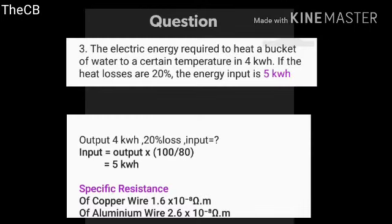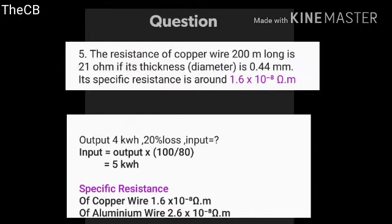Given: output equals 4 kilowatt hours, heat loss is 20%. Input equals how much? Input equals output multiplied by 100 divided by 80, which equals 5 kilowatt hours. The specific resistance of a copper wire is 1.6 into 10 to the power minus 8 ohm meter.